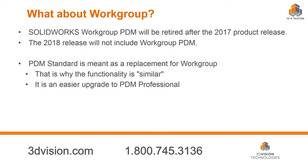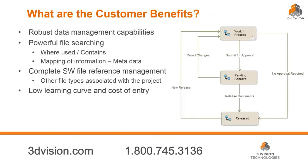With workgroup PDM, it will still be available in the 2017 release of SOLIDWORKS. When SOLIDWORKS 2018 is released, you will not have access to workgroup anymore. That doesn't mean your current product is going to go away — you can still use it if you would like. We're giving you about two years' notice to prepare and get ready. The reason we're doing this is because PDM Standard is an easier upgrade to Professional than workgroup is. We'll provide a link to a blog that Jeff Sweeney, my counterpart at 3D Vision, wrote about how to get your data out of workgroup. PDM Standard also has very similar functionality to workgroup.